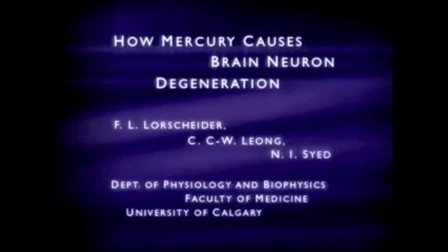How Mercury Causes Brain Neuron Degeneration. Mercury has long been known to be a potent neurotoxic substance, whether it is inhaled or consumed in the diet as a food contaminant.